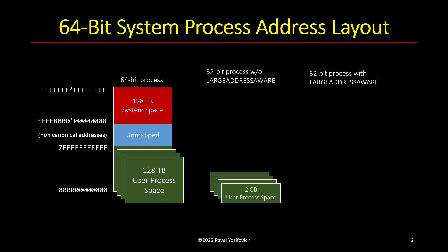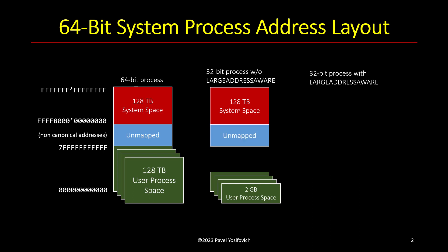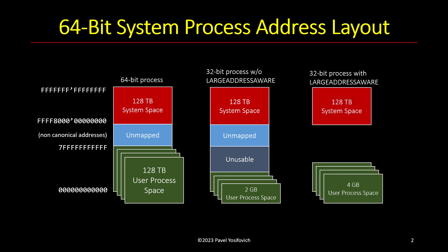In the 32-bit case, without the Large Address Aware flag, a process gets 2 gigabytes of address space — exactly what you'd get on a native 32-bit system. Windows 11 doesn't even have a 32-bit variant, since many of its security features require a 64-bit processor. With the flag set, the process gets 4 gigabytes — the maximum a 32-bit process can use given the limit of 32-bit addresses. There are also unmapped and unusable portions of the address space in both scenarios.